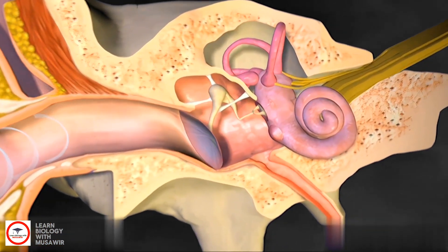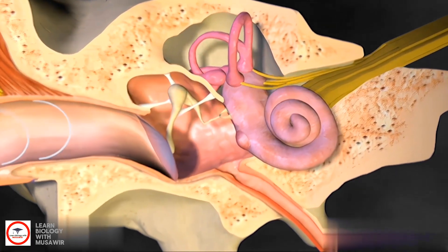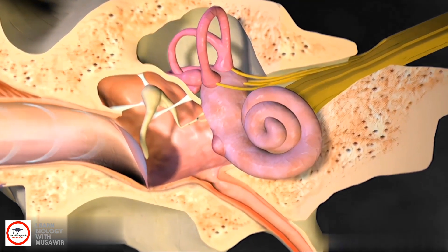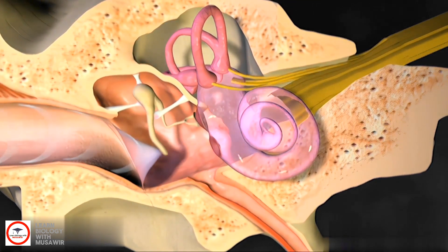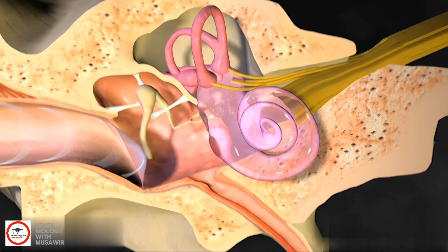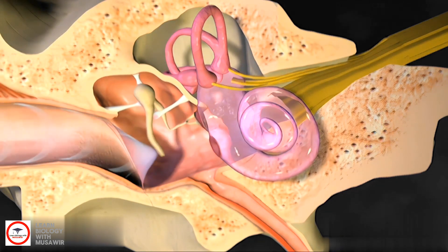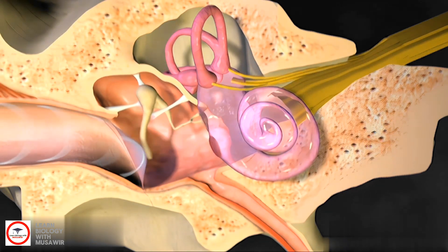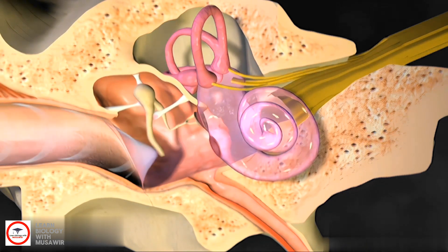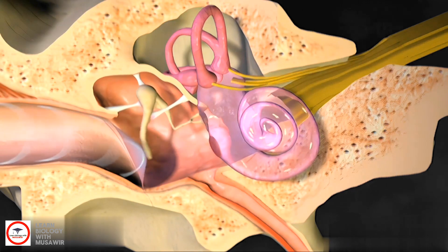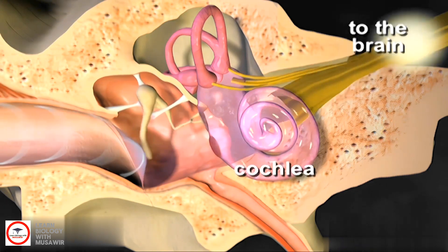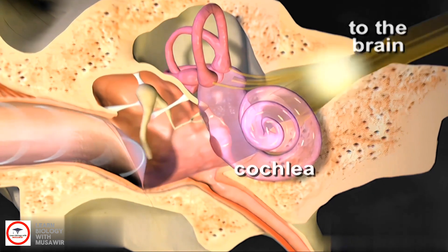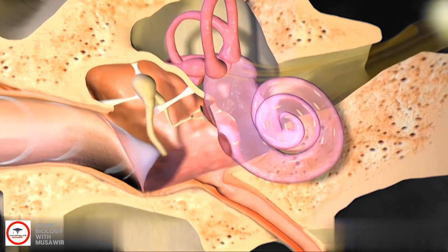Sound waves first travel through the outer ear, into the ear canal, and then vibrate the eardrum. The eardrum is connected to three tiny bones in the middle ear. The vibration is passed to the cochlea in the inner ear, where it is processed and sent to the brain.